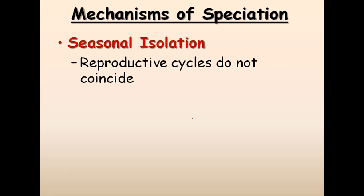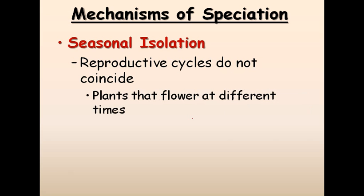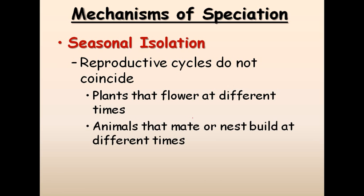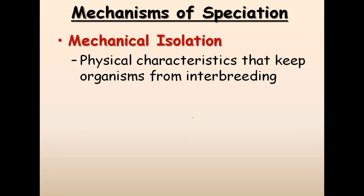Seasonal isolation occurs when reproductive cycles or seasons vary between populations. For example, plants that flower at different times can never reproduce at the same time because their reproductive timing varies. Similarly, animals that mate, nest, or build nests at different times cannot come together and breed. If the reproductive periods of two organisms never match, speciation between them cannot occur.